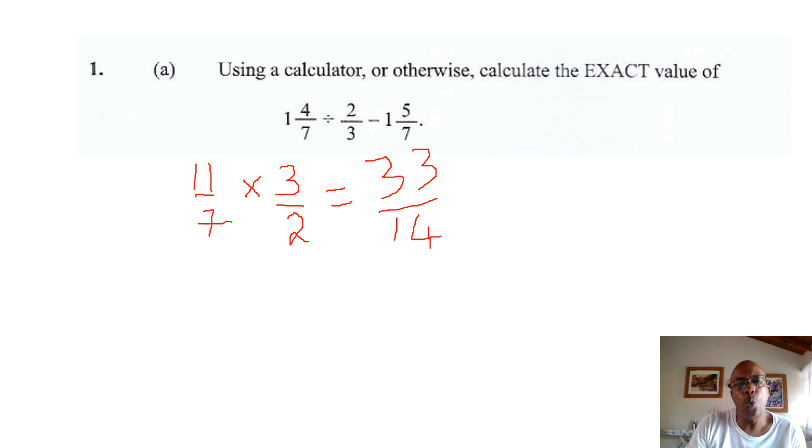So, now you must subtract 1 and 5 sevenths. So, I will go to the next line. I put down the answer for the first operation. So, 33 over 14.